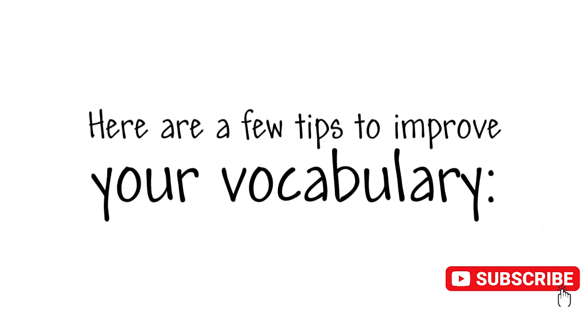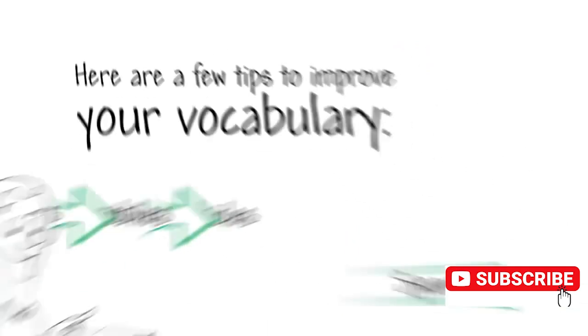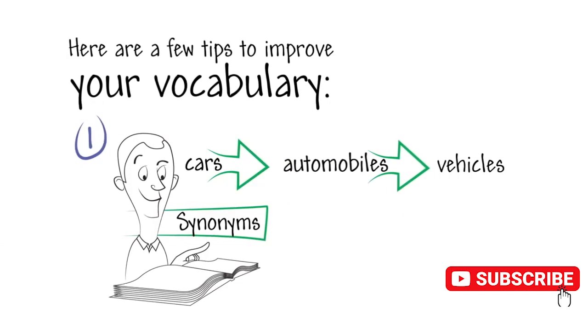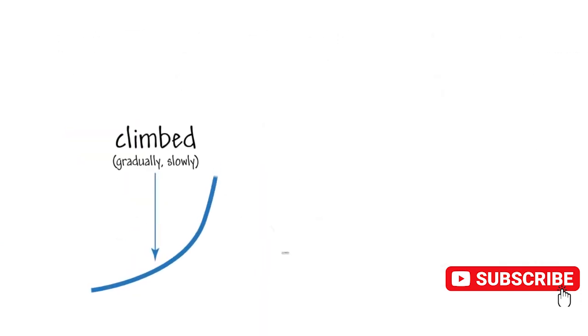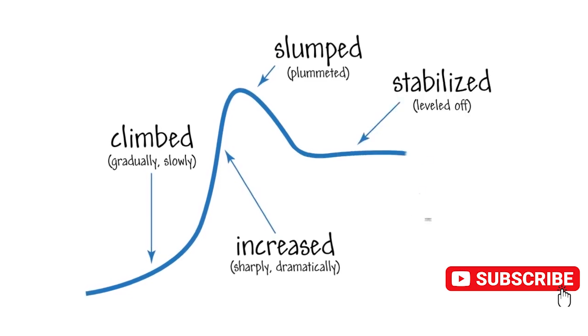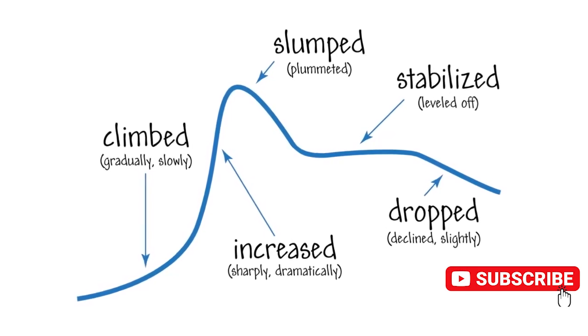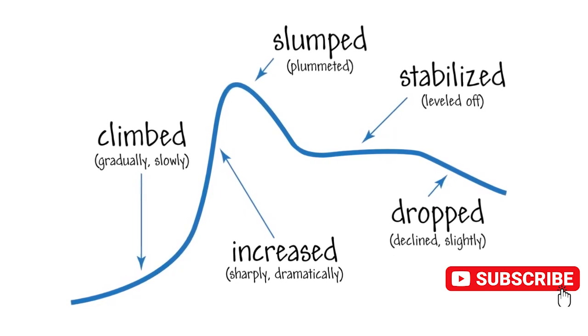Here are a few tips to improve your vocabulary. Number one: when you are learning English vocabulary, learn synonyms. This helps you avoid repeating the same word. For example, learn different ways of describing changes or trends for task one answers.